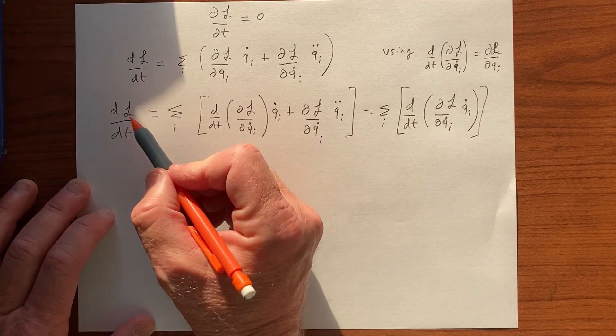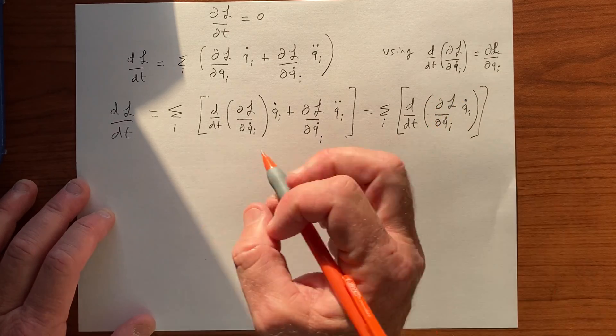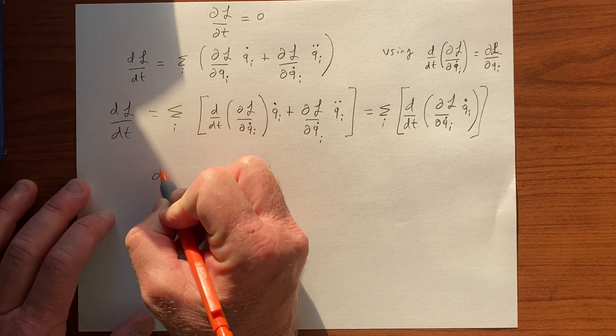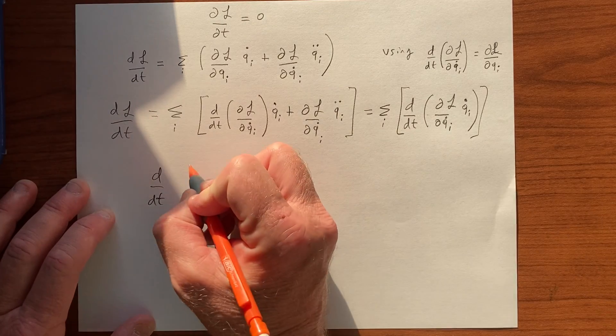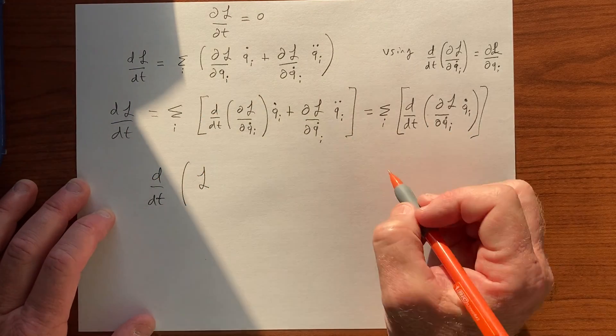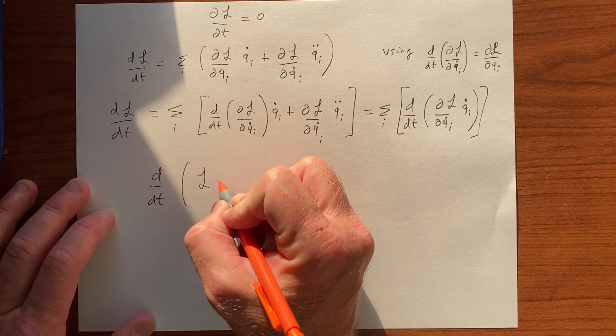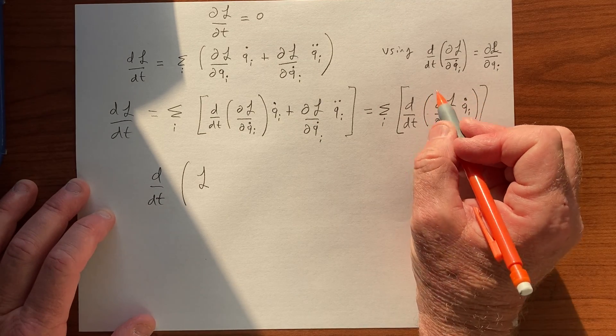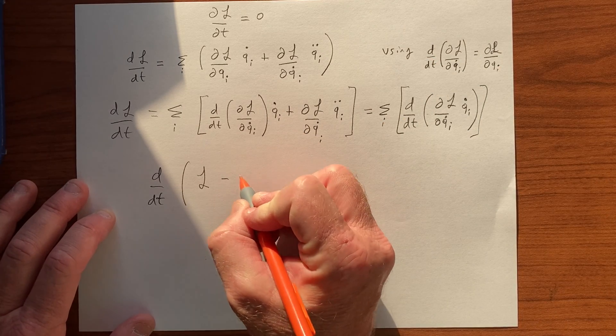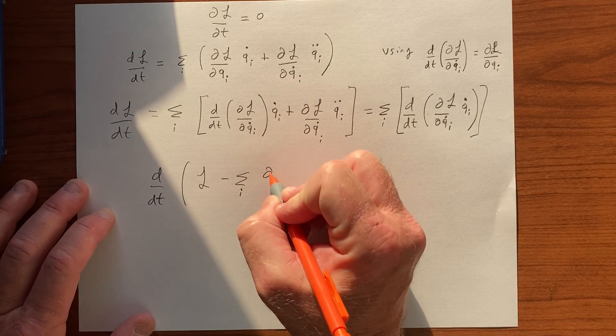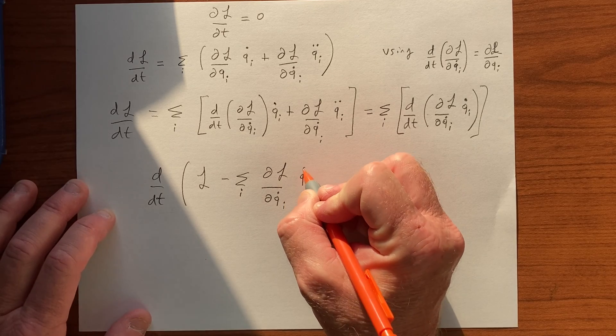And of course, we have this is equal to this, and so we can say that D by DT of L minus the sum of DL by DQi dot times QI dot.